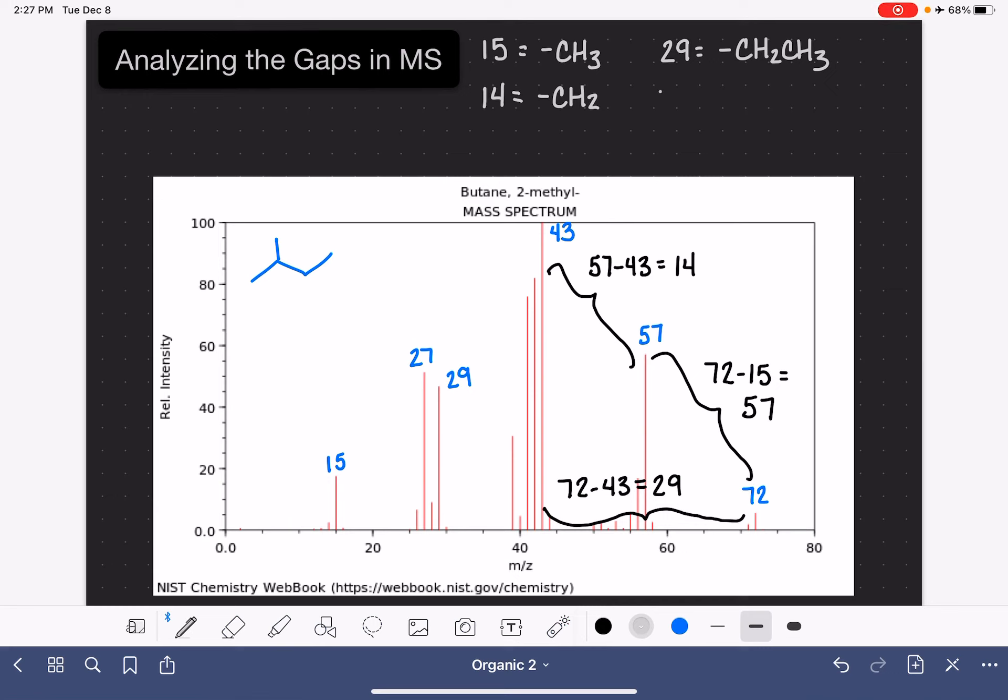Keep in mind that all different types of fragmentations are possible. So if you saw a gap of 28, maybe that would correspond to a CH2CH2, something like that. 43 is also another common gap that corresponds to a propyl group, CH2CH2CH3. And hopefully you just kind of get the idea.